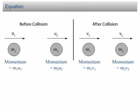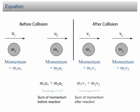Equation. If two balls of mass m1 and m2 collide with each other, the velocity before the collision is u1 and u2, while the velocity after the collision is v1 and v2, respectively.